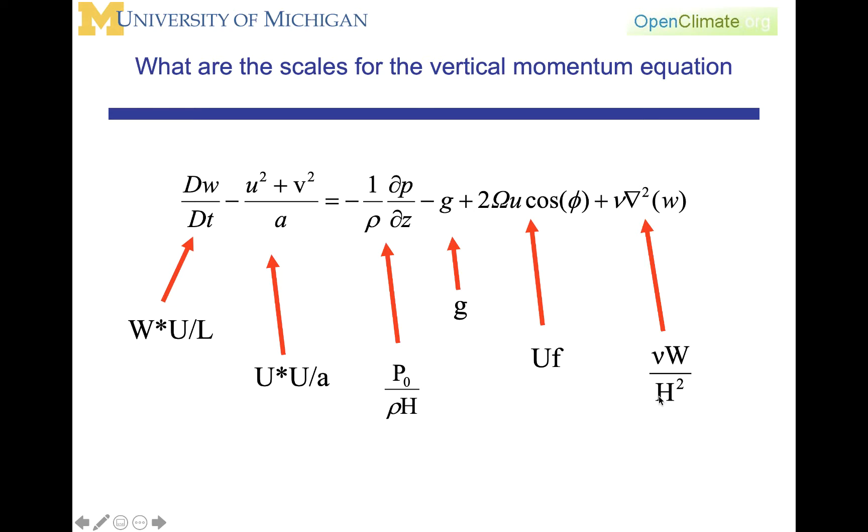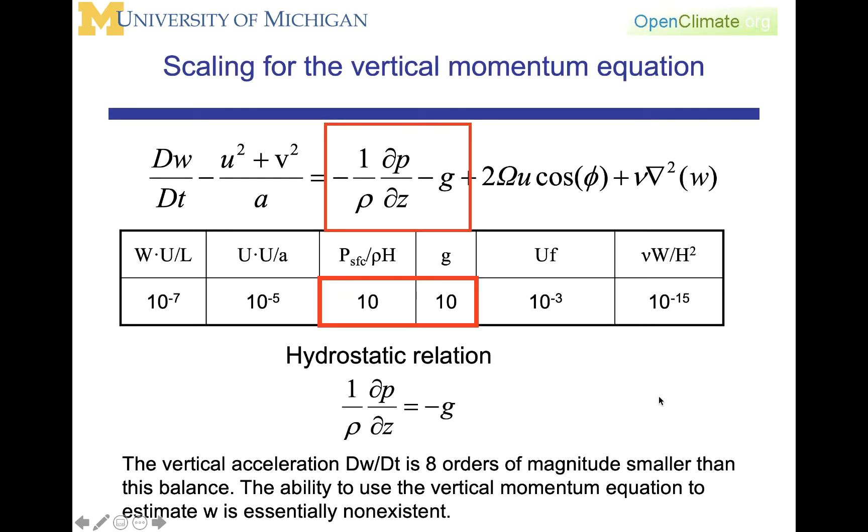When we substitute numerical values into that equation, we see that the viscosity is very small, 10 to the minus 15. We see that the Coriolis term is 10 to the minus 3, which would have been quite large in the horizontal momentum equation. However, here in the vertical momentum equation, we have gravity and we have the representation of the pressure gradient force and they are both up at around a value of 10. The curvature term is 10 to the minus 5 and the vertical acceleration is 10 to the minus 7.